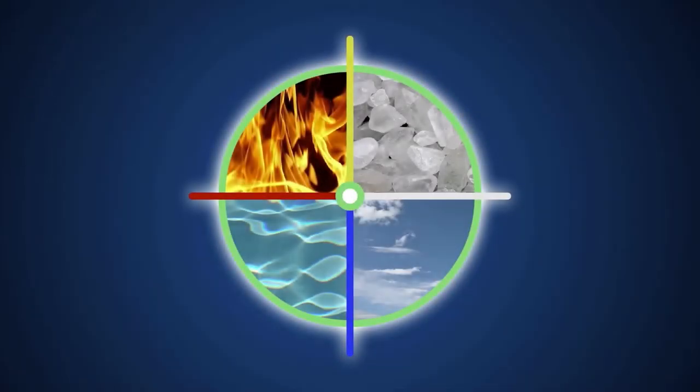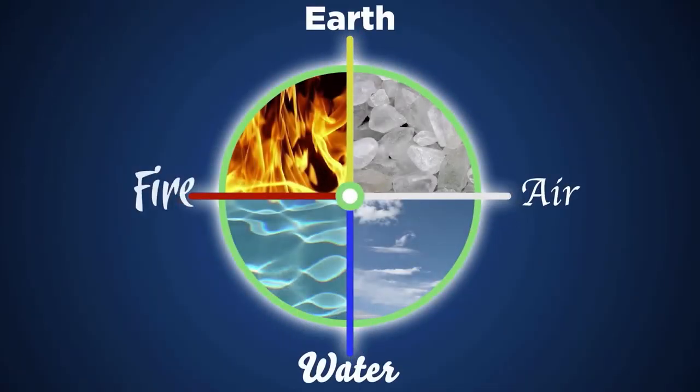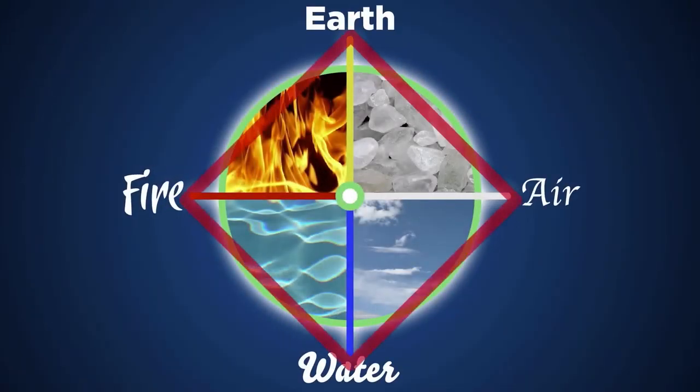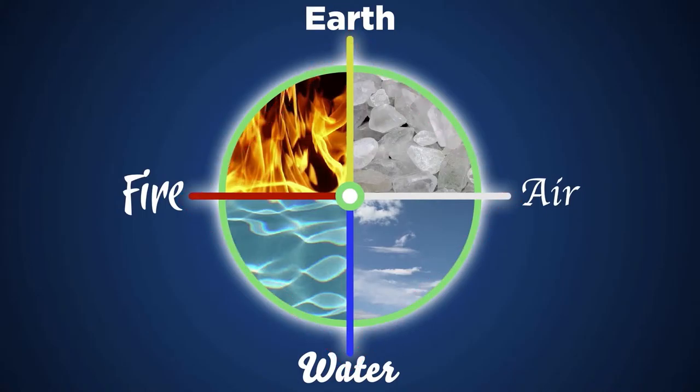We know the four elements: earth, air, water, and fire. It's the geometry of a square. We have this prevalent system of four all over our world.